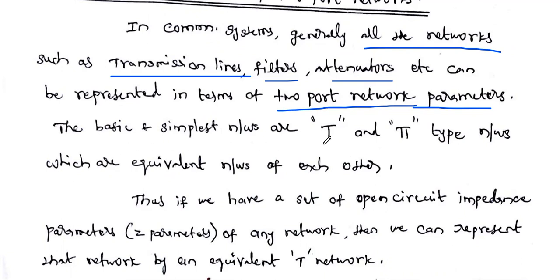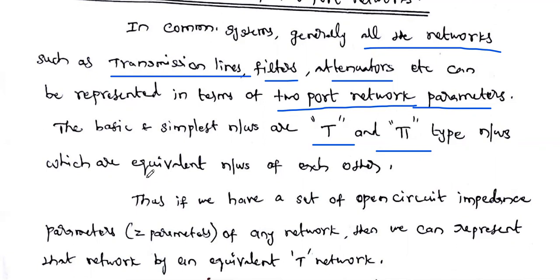There are two different formats of the two-port network: one structure is the T structure, and another one is the Pi structure. T means the elements are connected in the shape of a capital T, and Pi means the elements are connected in the shape of Pi. These are called T-type network and Pi-type network, and the T-type and Pi-type networks are equivalent to each other. We can convert a T network into a Pi network and vice versa.